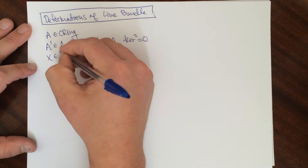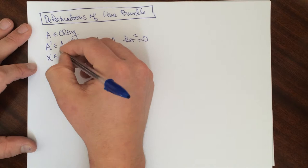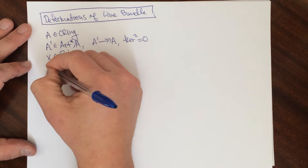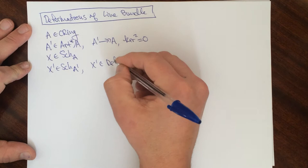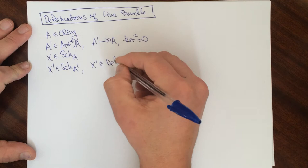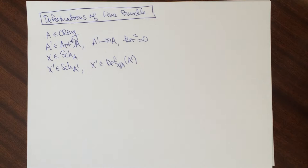So we're going to take a scheme X, it's going to be a scheme over A. And then we're going to fix a deformation scheme over A prime. So this X prime is going to be a deformation of X over A to the ring A prime. You can see the video on deformations if you haven't seen this.